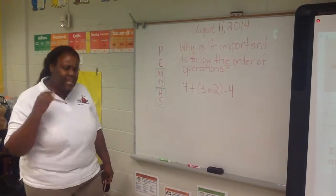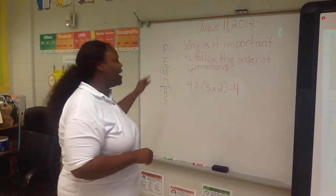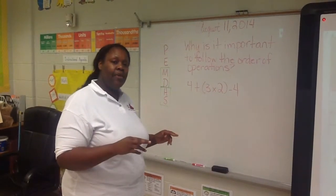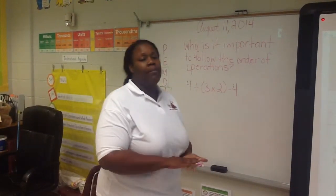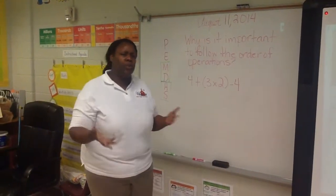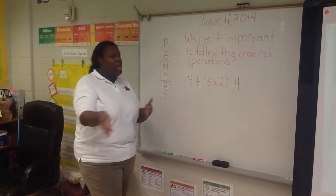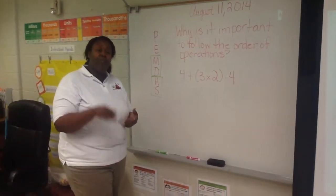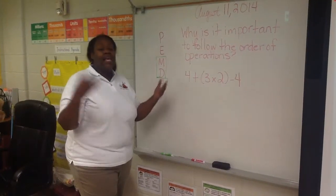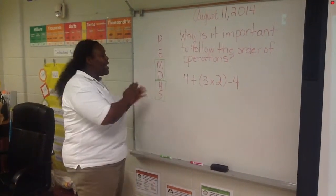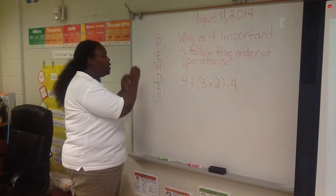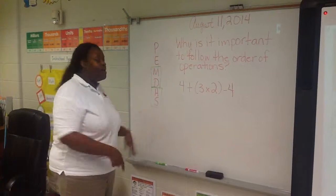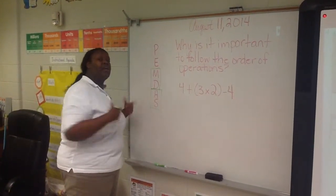I wonder if you can tell me — let's think back — why do I have multiplication and division circled together? And why do I have addition and subtraction together? Remember, they're on the same level. We use the example of your parents coming in the house with McDonald's. She'll bring both of you McDonald's if you're brothers and sisters, but the person she sees first is the person she gives it to first. So whichever one comes first: if division comes before multiplication, you do that; if multiplication comes before division, you do that.